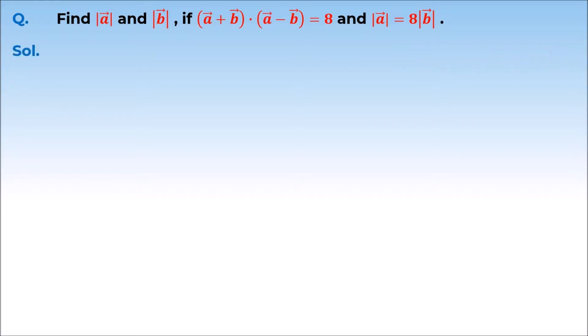So let's solve this. We have given that A vector plus B vector dot A vector minus B vector is equal to 8.